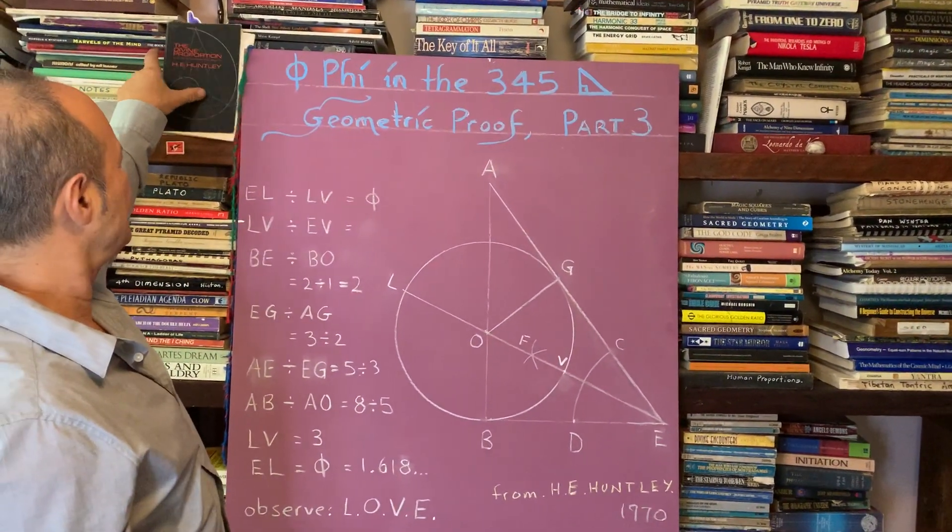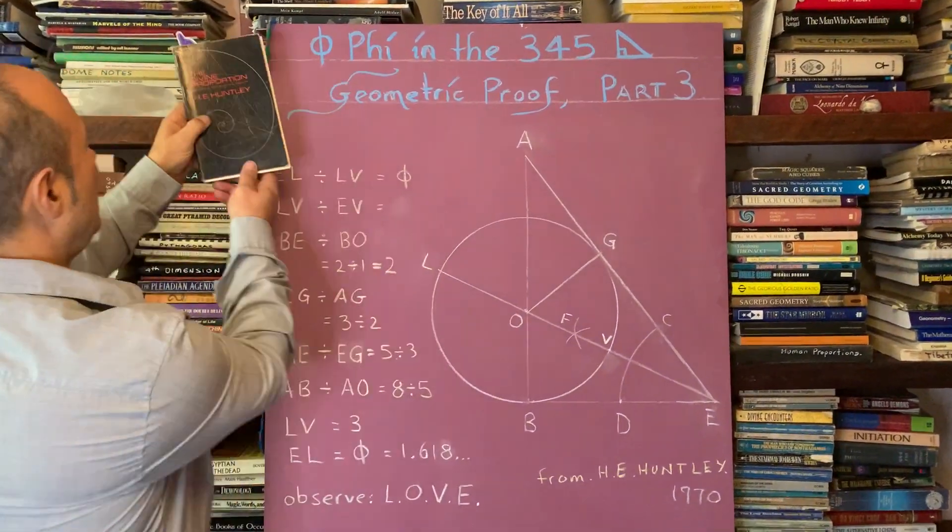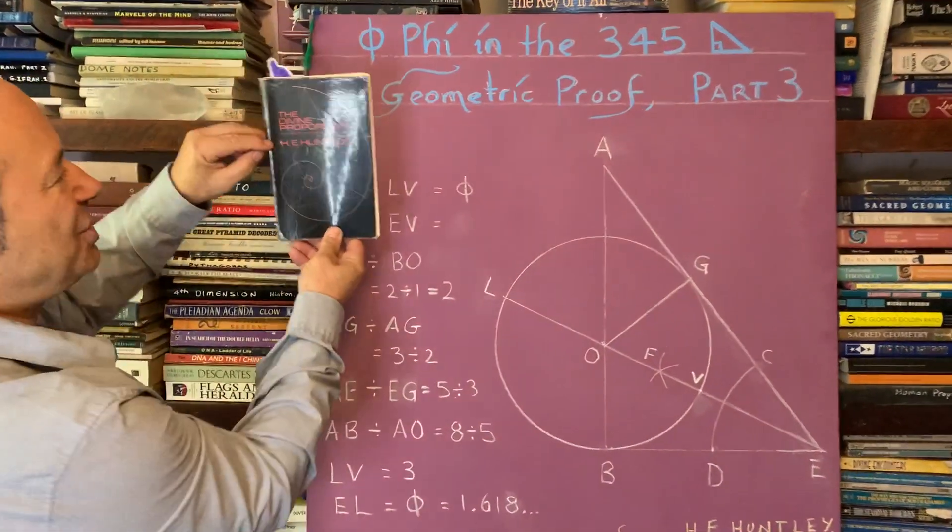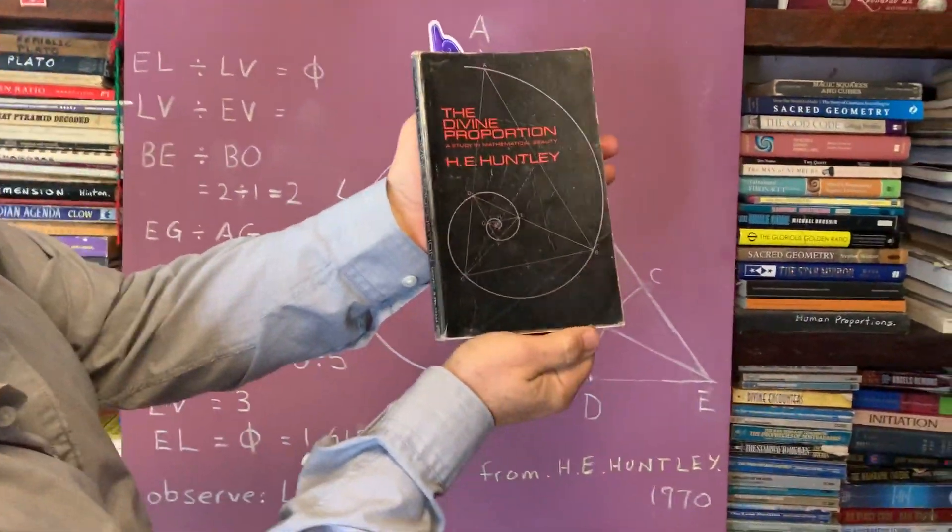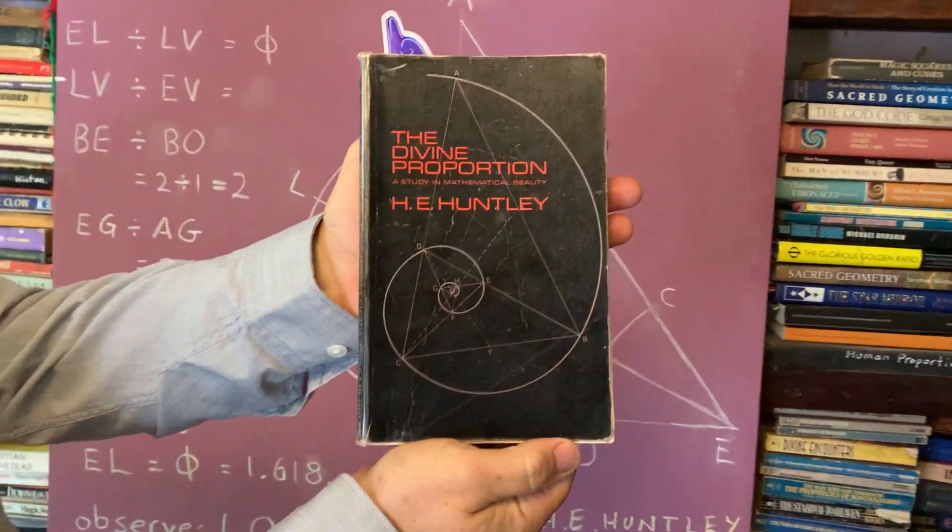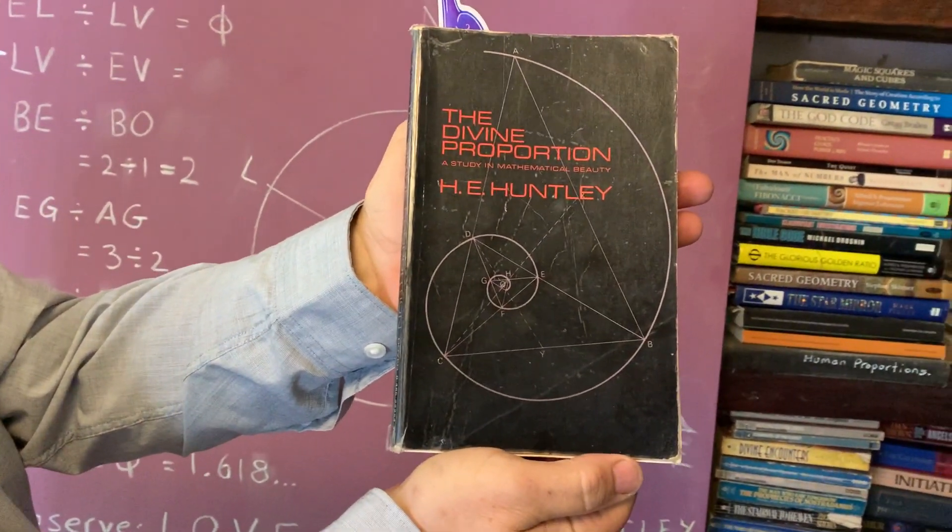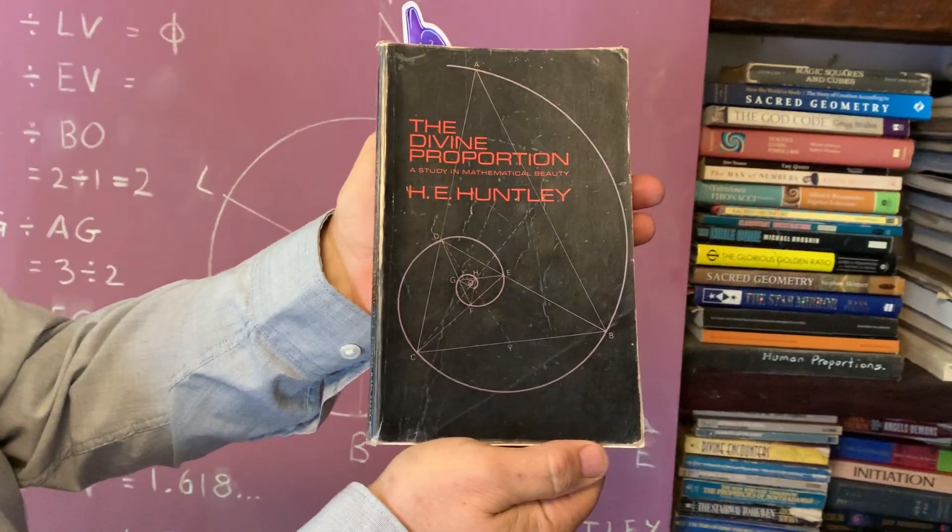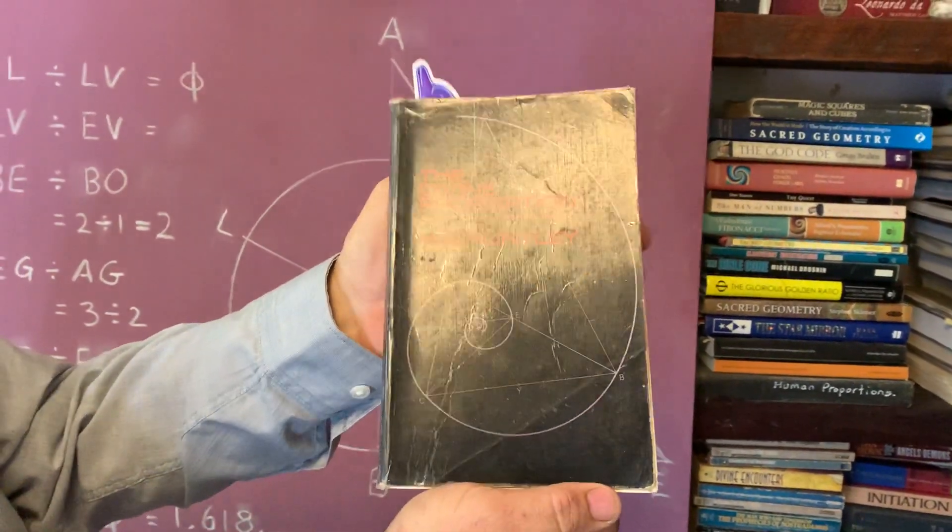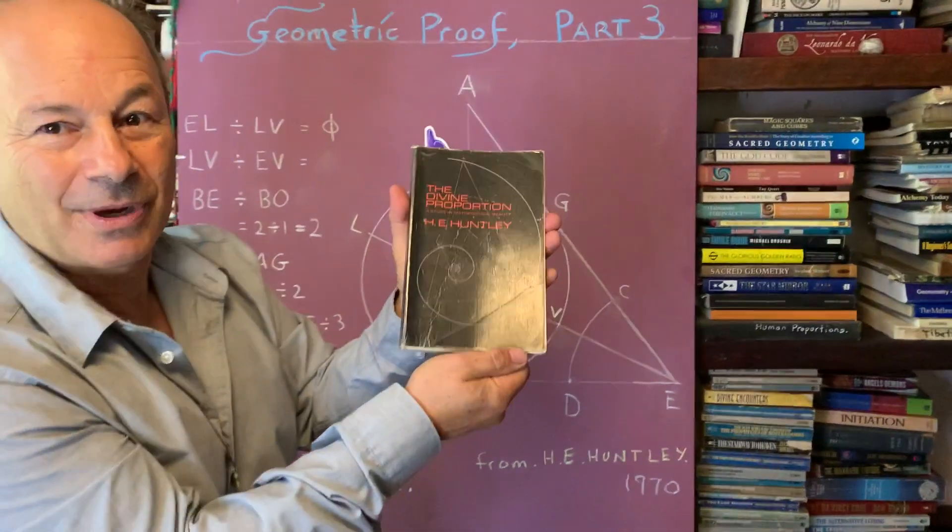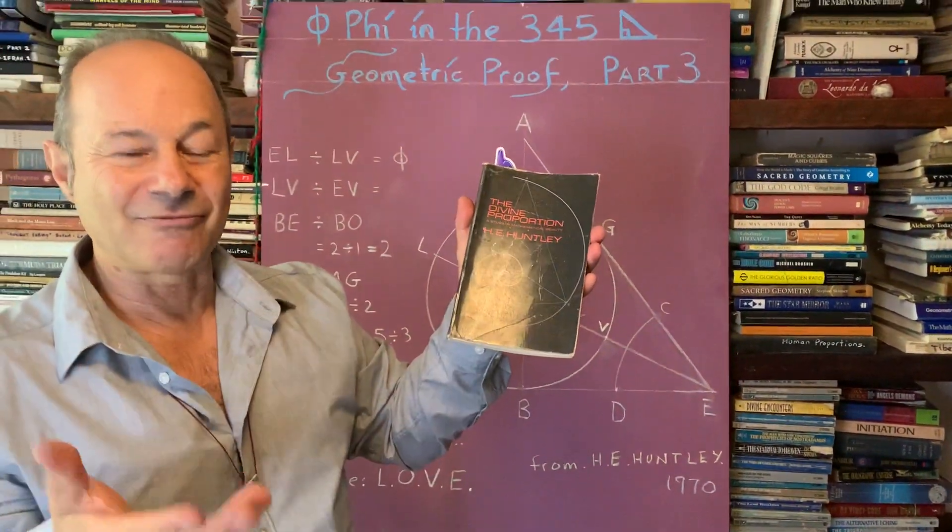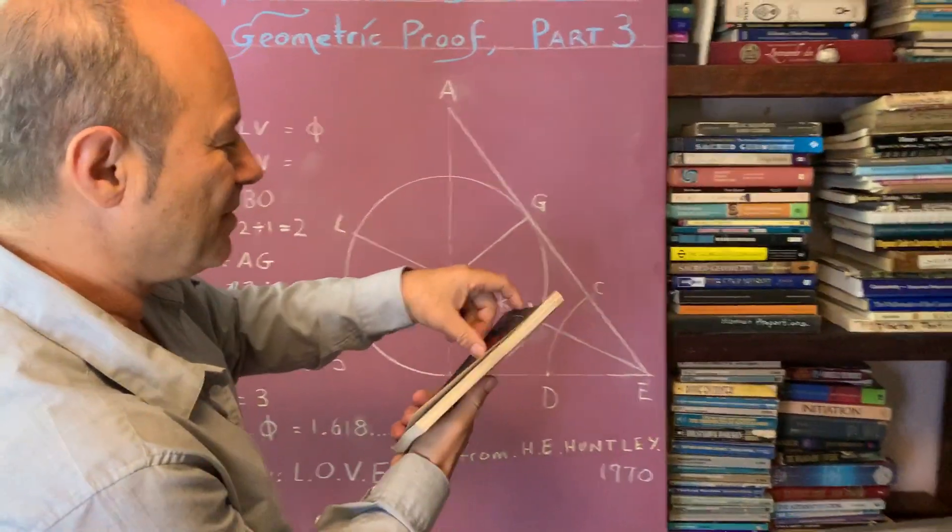This interesting geometric proof comes from a book by H.E. Huntley called The Divine Proportion. This is another one of my Bibles, like the book by Robert Lawler. Robert Lawler did his in the early 1980s. This book was published in 1970, so this was the book that inspired great teachers like Robert Lawler.